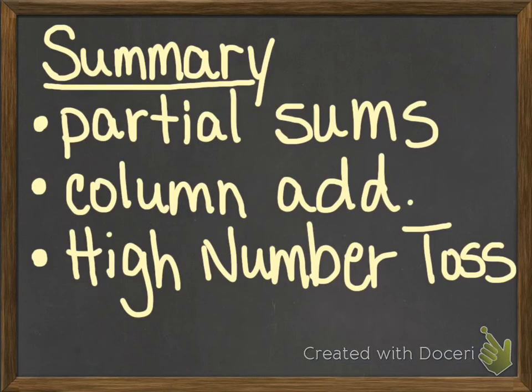So let's do a summary. We've talked about partial sums, and hopefully that's a review for most of you. And that's where we basically take the numbers apart, and we break them down by hundreds, tens, and ones, and then we add them together. We talked about and looked at column addition, and that is when we add each column individually. And we learned how to play the high number toss game. So hopefully that makes sense.